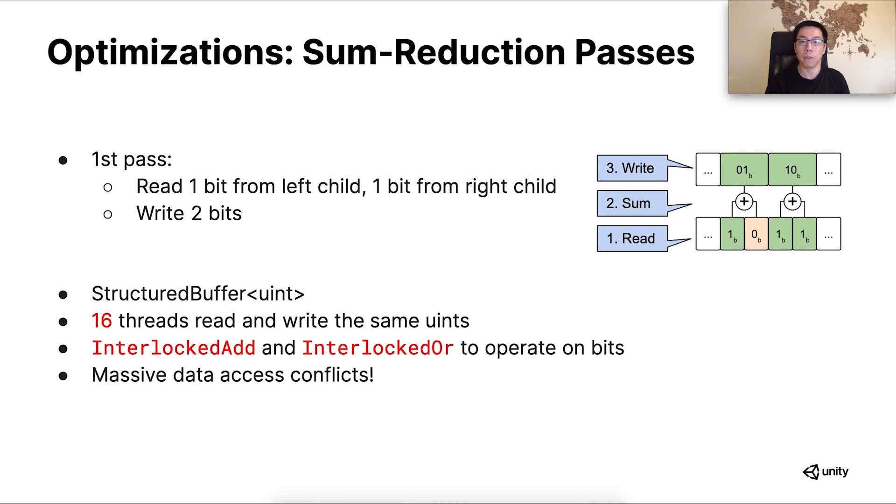So, first of all, there are simply lots of data to write. For a 28-depth CBT, we have 2 to the 27th level 2 parent nodes, which has about 127 million such nodes. Dispatching one thread for one such node is not only unviable, but also feeds way too little workload to the GPU to consume efficiently.